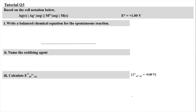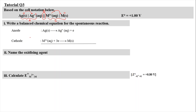Now let's move on to Question 3. Based on the cell notation given — Ag(s) | Ag⁺(aq) || M³⁺(aq) | M(s) — the left side (Ag → Ag⁺) represents oxidation at the anode, and the right side (M³⁺ → M) represents reduction at the cathode. The double line means salt bridge. We have to write a balanced chemical equation. At the anode: Ag(s) → Ag⁺(aq) + e⁻. At the cathode: M³⁺(aq) + 3e⁻ → M(s). This is reduction.